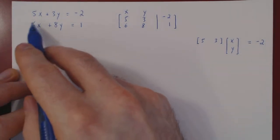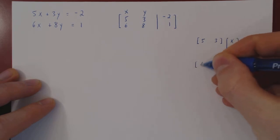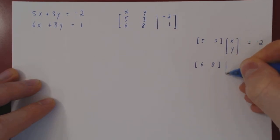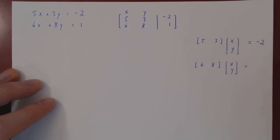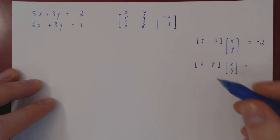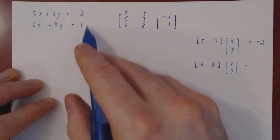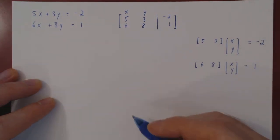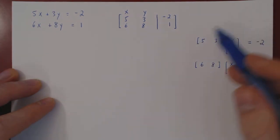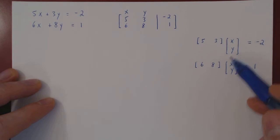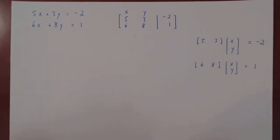Look at the second equation: 6 times x plus 8 times y equals 1. This looks like a row 6, 8 times the column x, y. The result is again a 1 by 1 matrix, which we can think of as a real number: 6x plus 8y equals 1. So every equation of the linear system is a matrix multiplication between a row and a column. We can easily combine this into a single matrix multiplication equality.